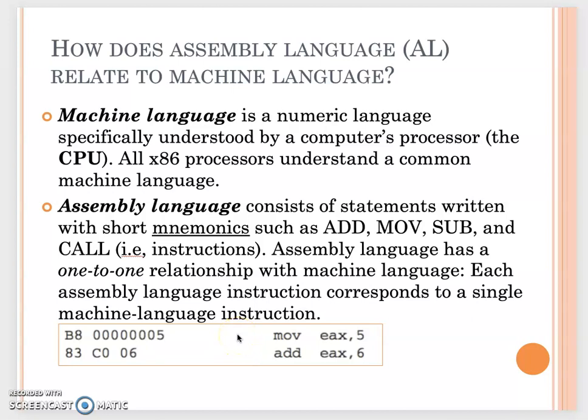So continuing with the previous video, let me finish talking about what move eax, 5 means. The move is an instruction from assembly language. It means you will move one value to another location. After the move we have two operands separated with a comma.